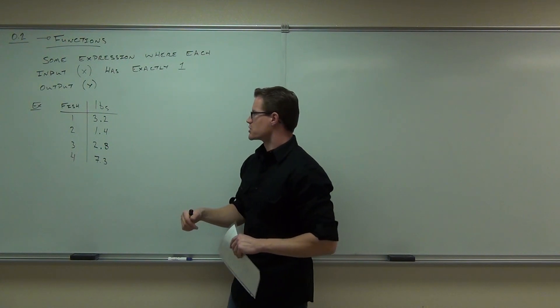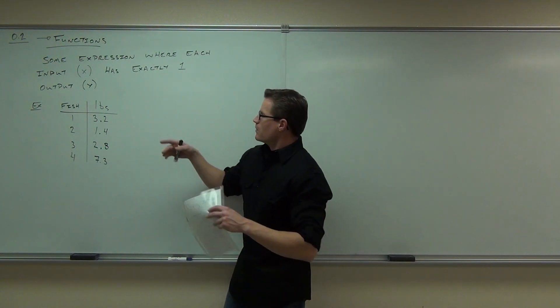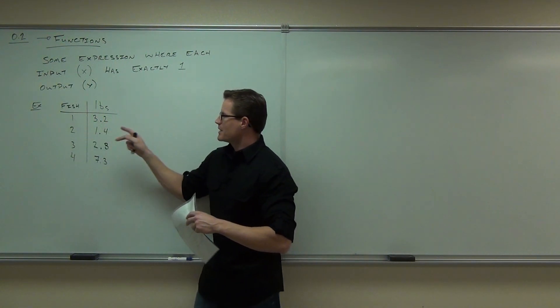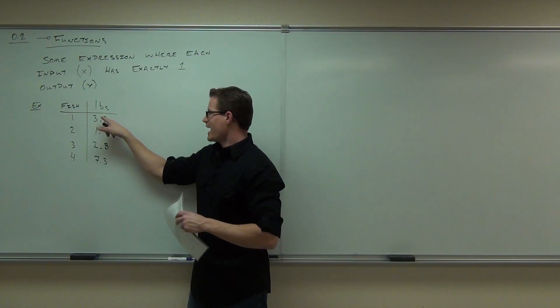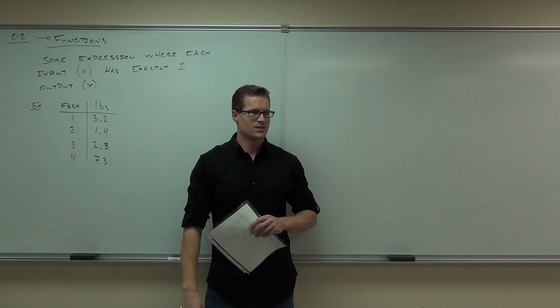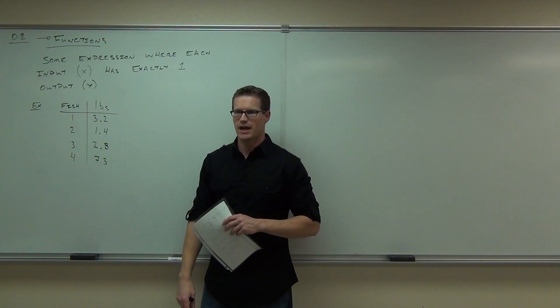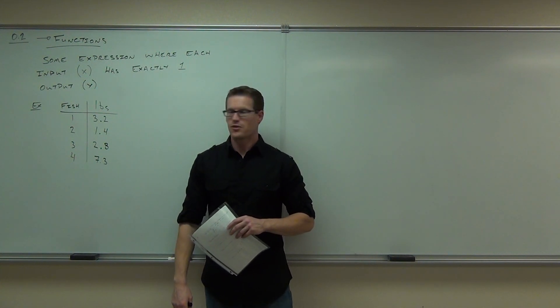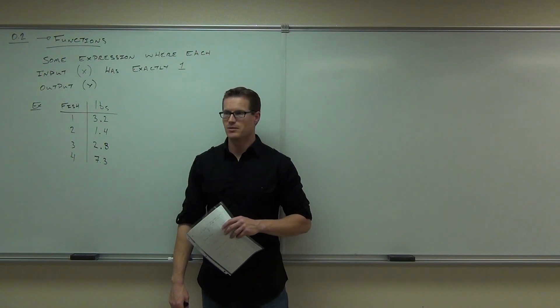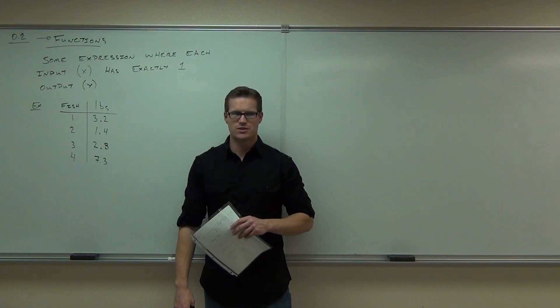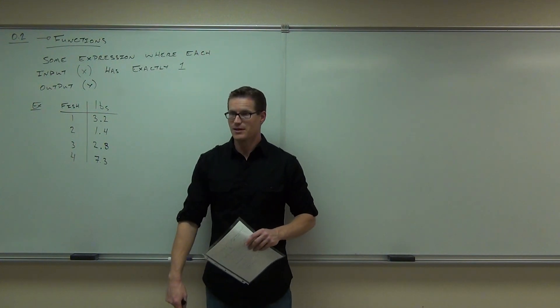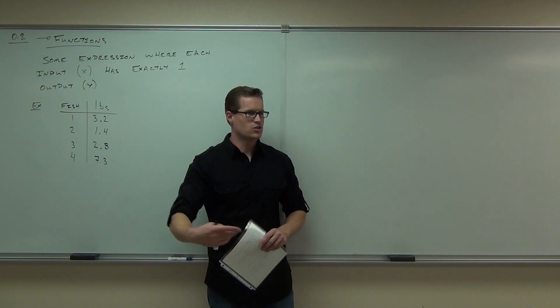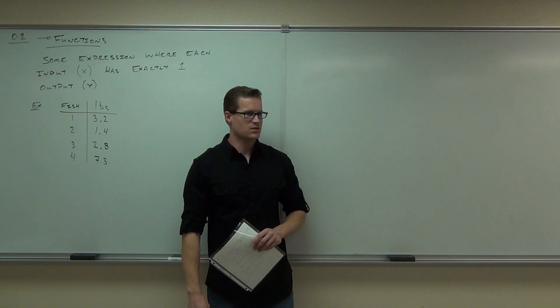A unique output would be a one-to-one function, and we're not there yet. So when we say it has one output, I mean that I don't have fish number one weighed 3.2 pounds and 4.7 pounds. Because you'd say, how much did your first fish weigh? I'd say 3.8 or 4, 3.2 or 4.7. Would that make sense to you? Well, no, seriously, how much did your fish weigh? 3.2 or 4.7. And you'd be like, that doesn't make any sense. You're giving me two weights for the same fish. Does that make sense to you?